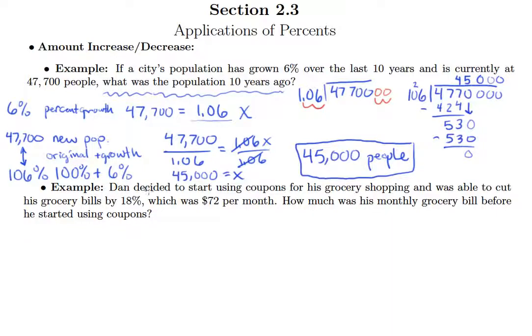Okay, all right, so the next example we'll look at, it says, Dan decided to start using coupons for his grocery shopping and was able to cut his grocery bills by 18%, which was $72 per month. How much was his monthly grocery bill before he started using coupons? So, again, they're asking us what was going on before the decrease happened. So that's definitely our base.